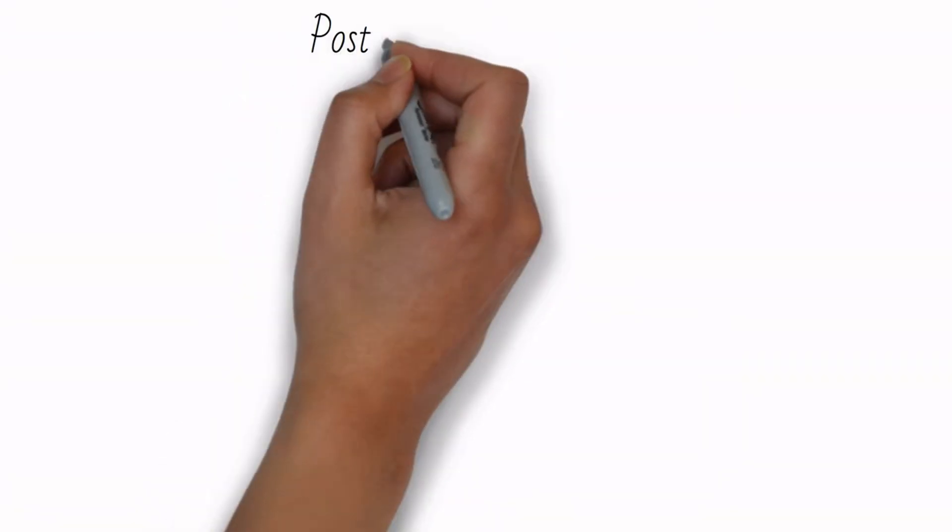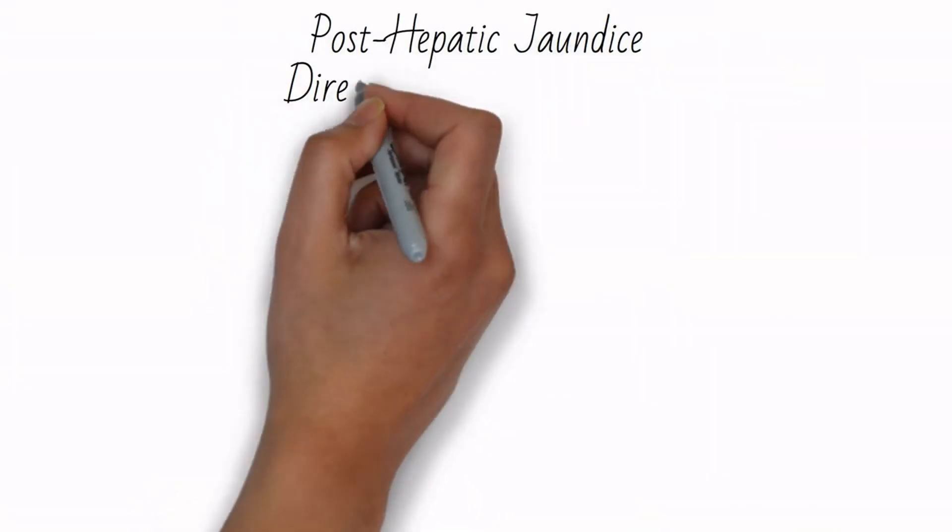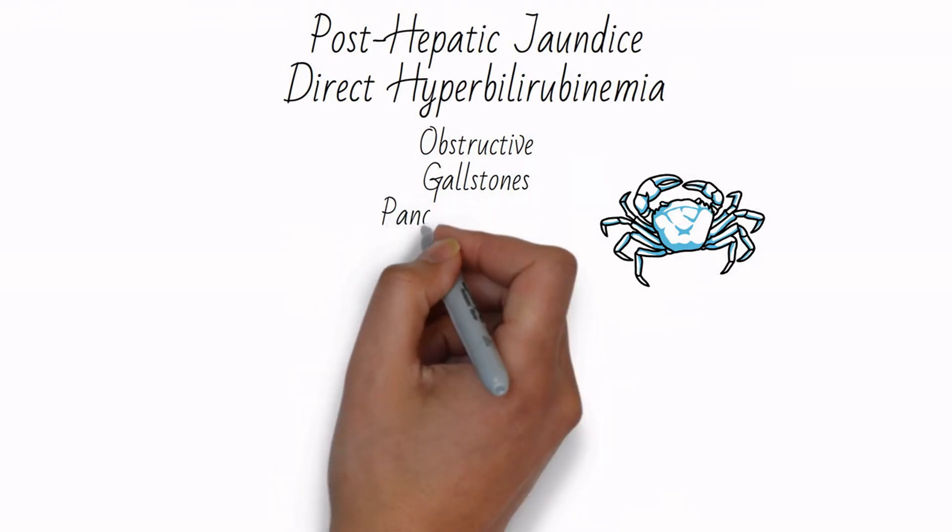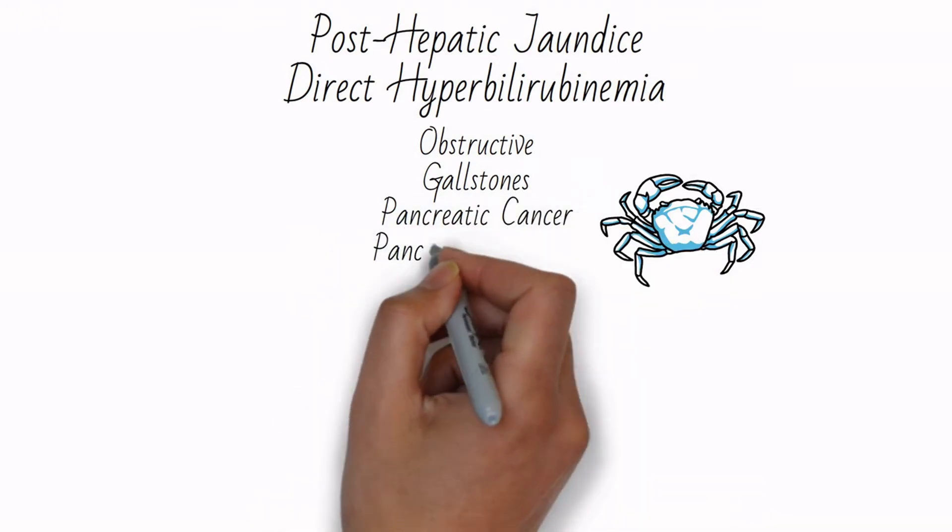Finally, post-hepatic jaundice leads to direct hyperbilirubinemia because there isn't a defect in bilirubin conjugation. This is obstructive jaundice, commonly due to gallstones or pancreatic cancer.